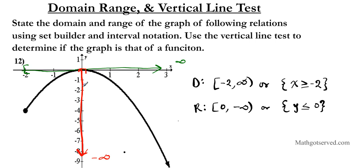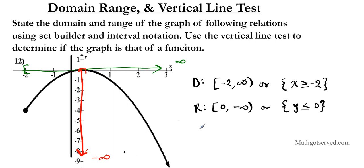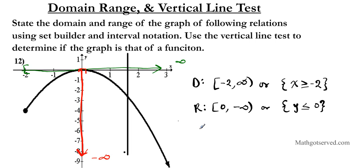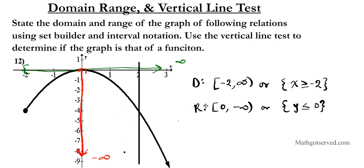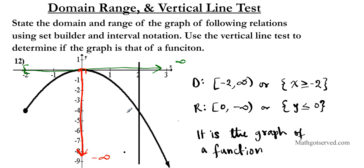Now, is this graph of a relation a function or not? We use the vertical line test — we draw a vertical line and move it across the entire graph, asking if there's any point in the domain where the line intersects the graph more than once. You can see that is not the case, so this graph passes the vertical line test. It is a graph of a function, because a vertical line intersects it exactly once throughout the entire domain.